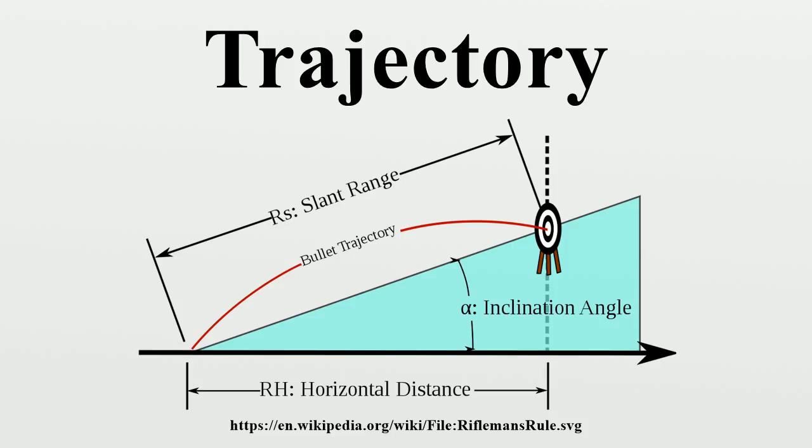The angle giving the maximum range can be found by considering the derivative dR/dθ with respect to θ and setting it to zero, which has a non-trivial solution at 2θ = 90° or θ = 45°.